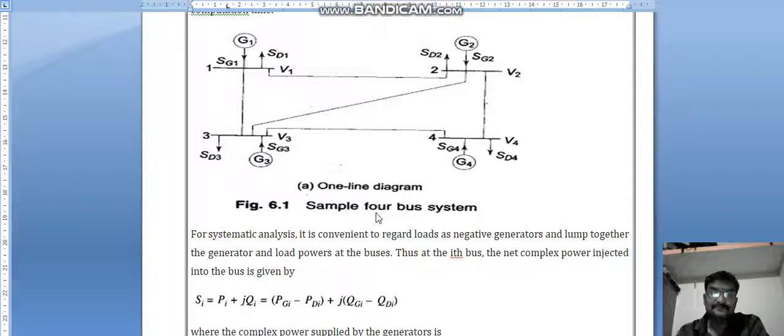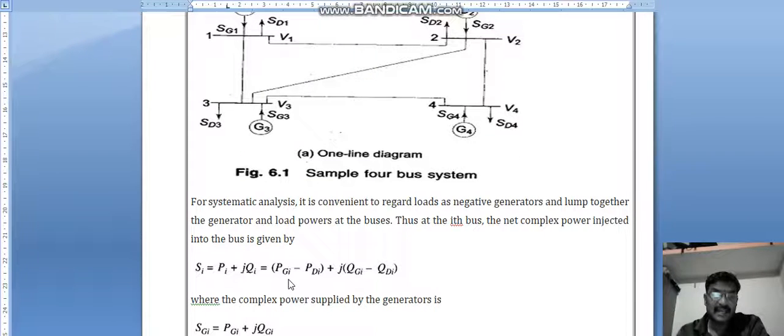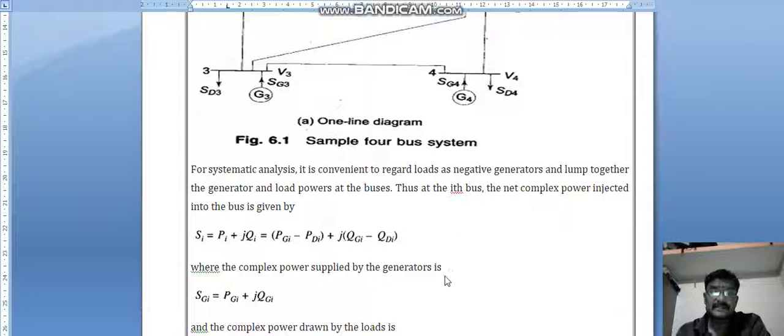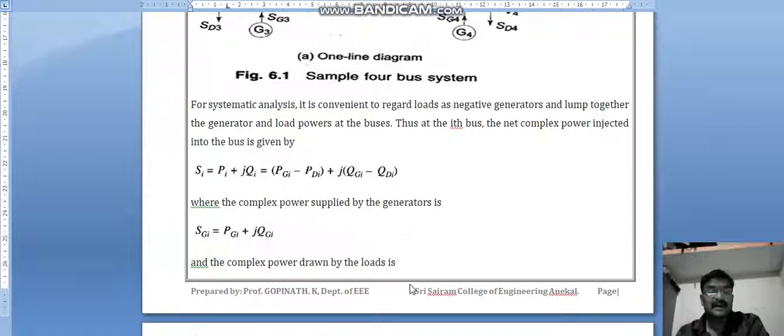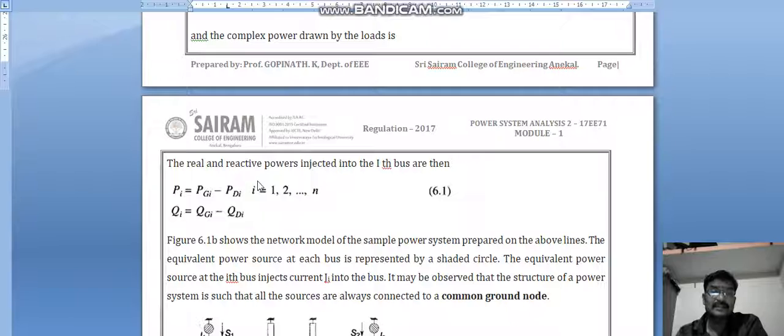Si equals Vi plus jQi, where P is the real part and Q is the reactive part. So we can rewrite Pgi from the generator minus Pdi plus j(Qgi minus Qdi), where the complex power supplied by the generator is Sdi equals Pgi plus jQgi, and the complex power drawn by the loads is Pdi plus jQdi.